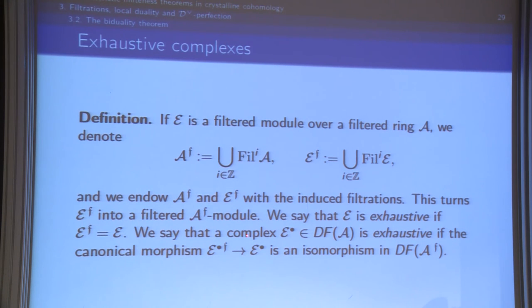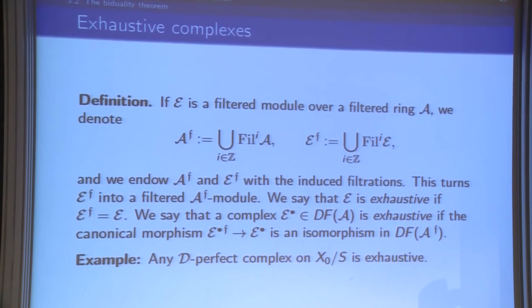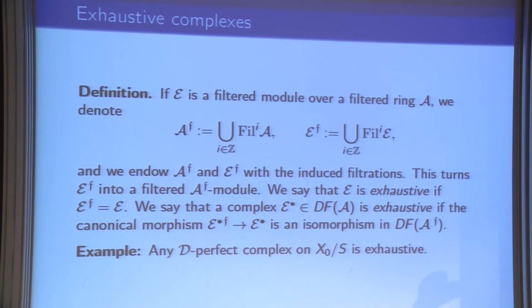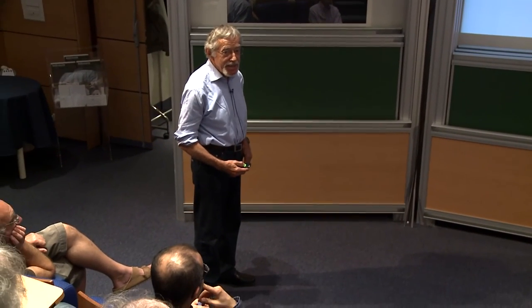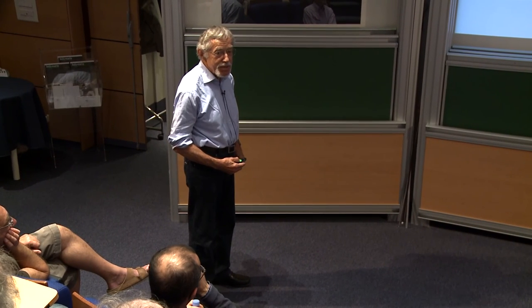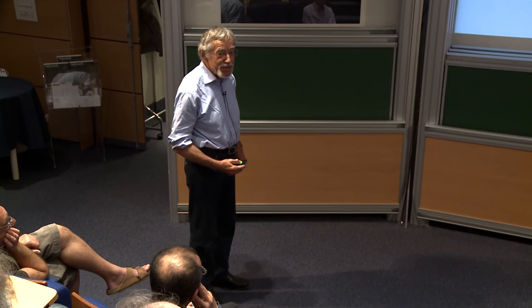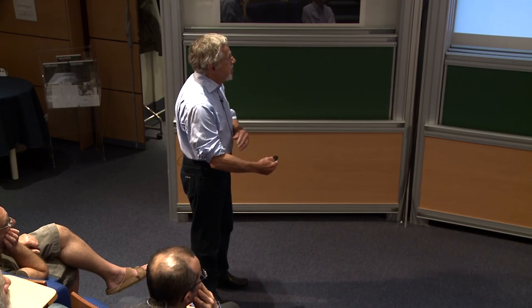In particular, a D-perfect complex is exhaustive, since the ring of differential operators is endowed with an exhaustive filtration. Perfection of a filtered complex can be tested on the associated graded, provided the filtration is exhaustive and discrete and the ring is Noetherian. That is in fact the point I will use crucially later. Now I return to the biduality map. I consider two complexes E^•, I^• of filtered A-modules over a filtered ring A, and the traditional biduality morphism sends E^• to Hom(Hom(E^•, I^•), I^•).